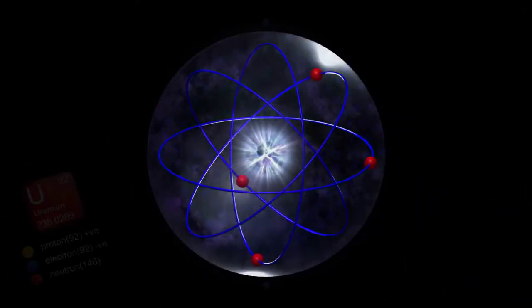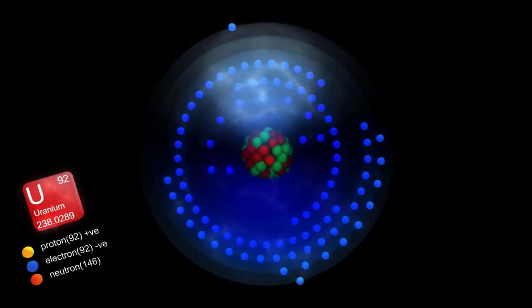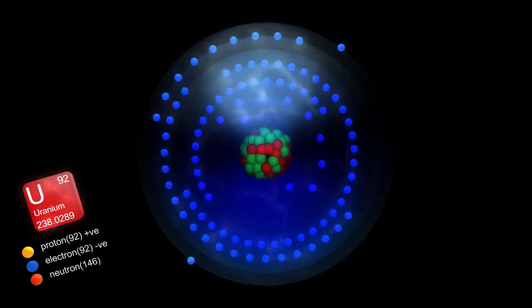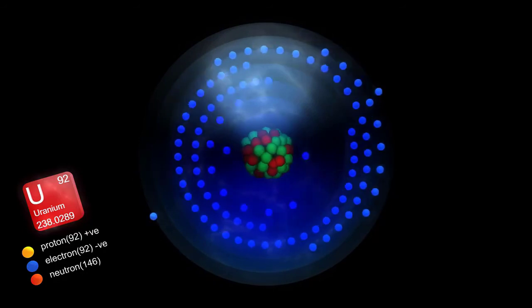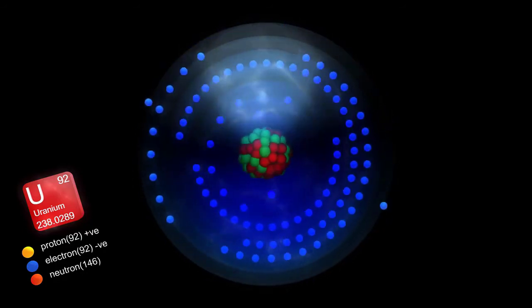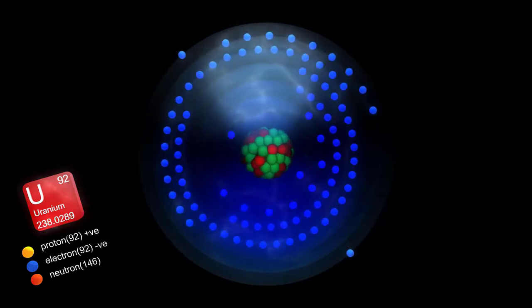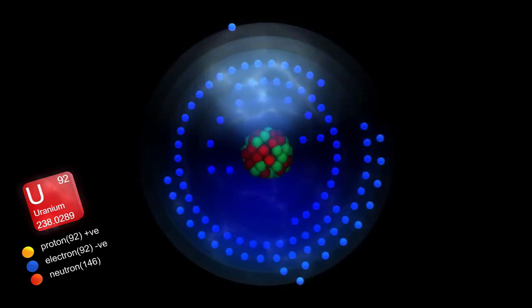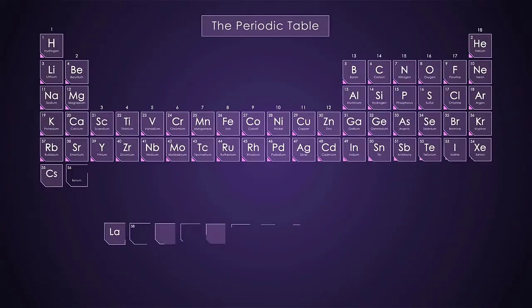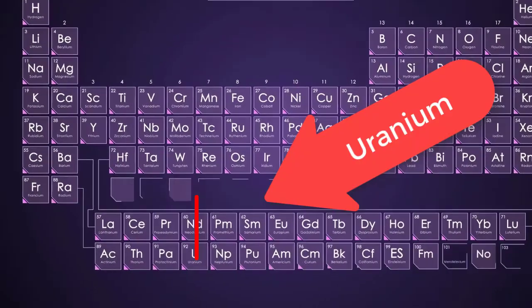Electrons have so little mass that they do not appreciably contribute to the mass of an atom. Carbon is relatively light. Uranium, in contrast, has a mass number of 238 and is referred to as a heavy metal. Its atomic number is 92. It has 92 protons, but it contains 146 neutrons.